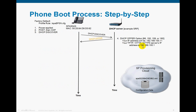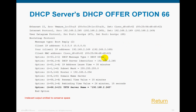Next step: the DHCP server — in this example the Services Ready Platform, the SRP 500 — sends an offer. The example in this offer is DHCP Option 66. In essence, it's saying your IP address is going to be this, your TFTP server's IP address is going to be this — it could be the same device or it could point to a cloud. And that's what the DHCP offer looks like. Of importance is Option 66, TFTP server name, and it's given it an IP address.